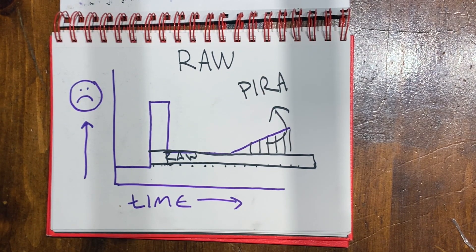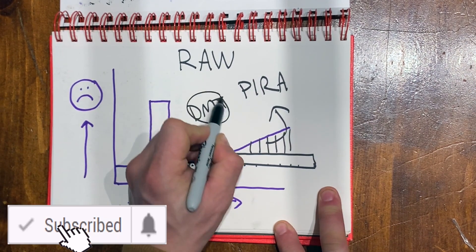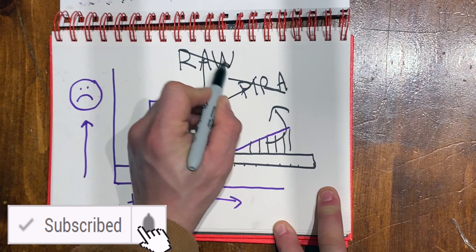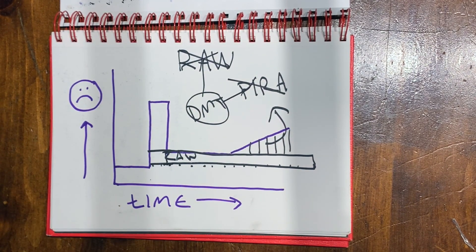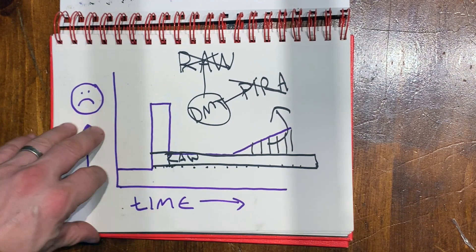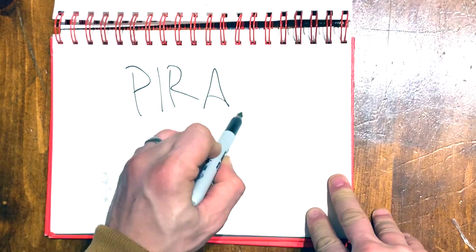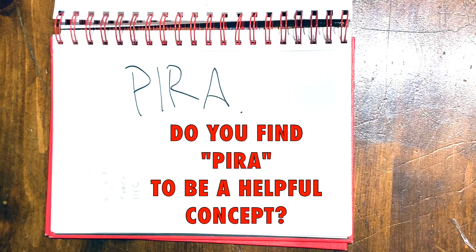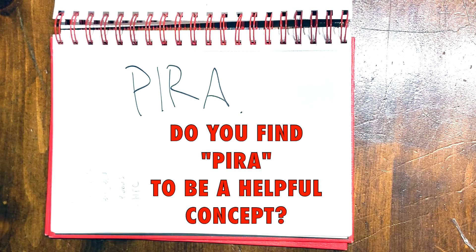It's also important to keep in mind that disease modifying therapies, they treat both of these things. And so it's not as if we're only able to do one and not the other. This was a quick discussion on progression independent from relapse activity. Please leave your comments or your questions about the concept in the comments section below. I look forward to reading them.